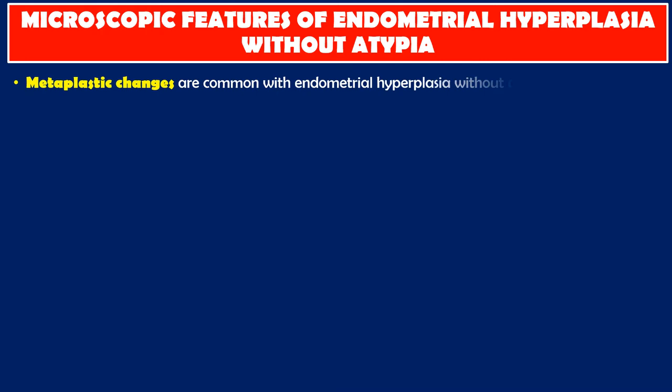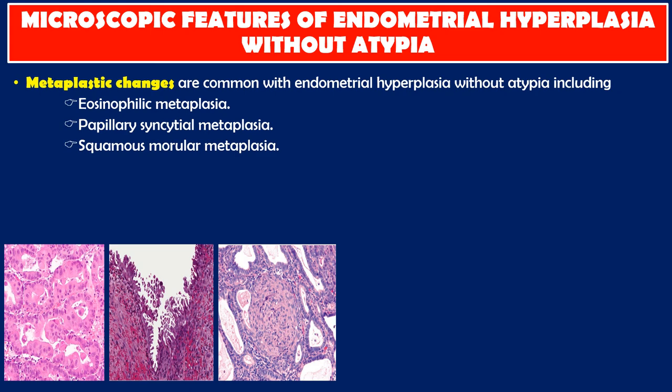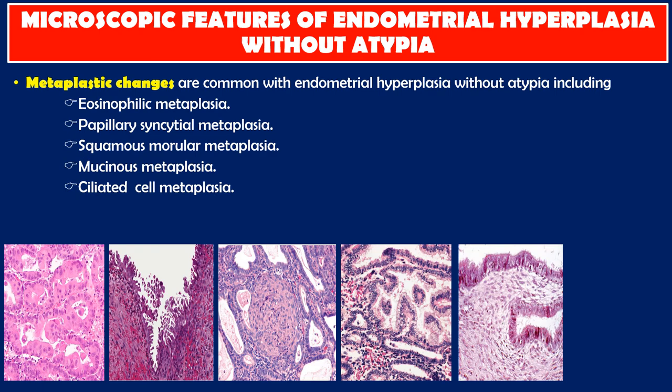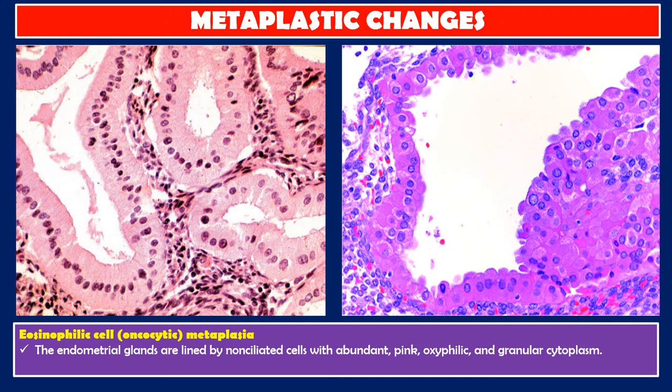Metaplastic changes are common with endometrial hyperplasia without atypia. In eosinophilic metaplasia, the endometrial glands are lined by non-ciliated cells with abundant pink oxyphilic and granular cytoplasm. Nuclei are round and mildly enlarged with preserved low nuclear-to-cytoplasmic ratio.